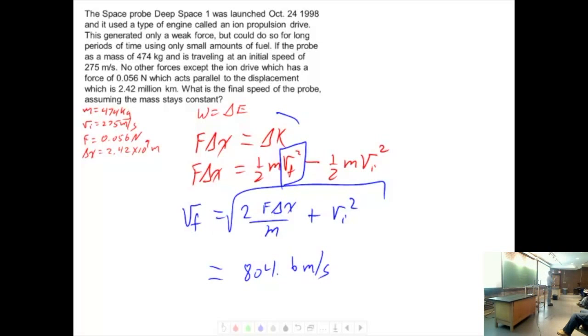So, this tiny little force on this space probe can get it going 804 meters per second. That's very fast. 50 meters per second is 112 miles an hour. So, this is moving.